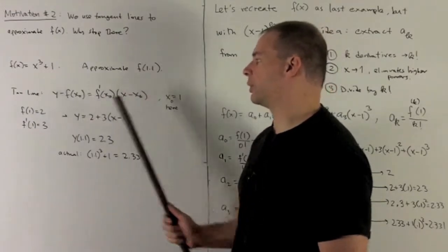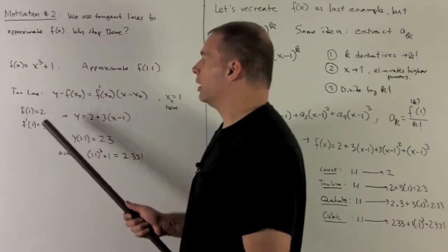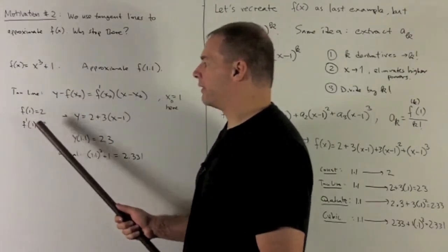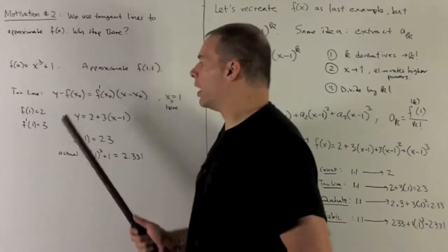So x₀ is 1, so we can push that through. I need f(1), which is 1 cubed plus 1 equals 2. Then I want the derivative evaluated at 1. Derivative of this is 3x squared, so if I put a 1 in there, I get a 3.